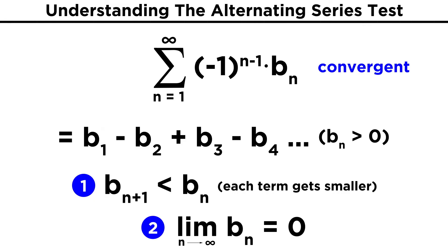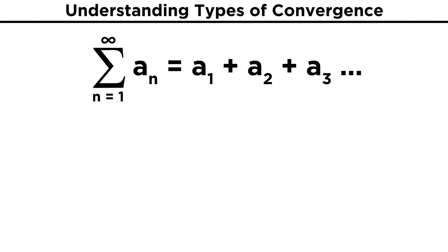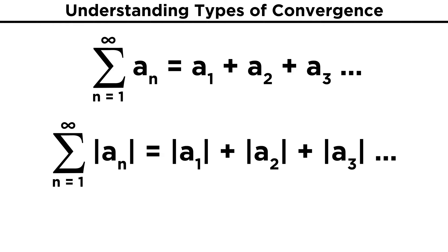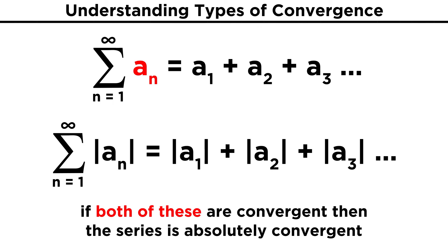So now we know how to look at alternating series and test for convergence, but we must now describe two different types of convergence. Let's say we have some series, a sub n, from one to infinity. Now let's take the absolute value of that series, which means we are taking the absolute value of every term in that series.